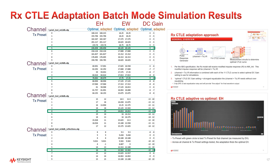The table has green lines to highlight the overall best setting for each channel with the corresponding eye height, eye width, and DC gain.